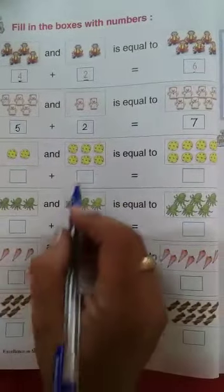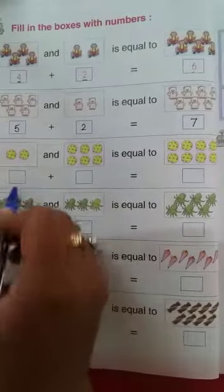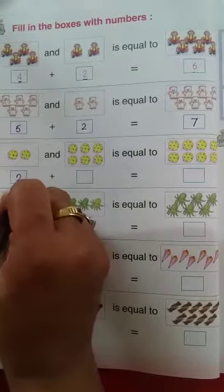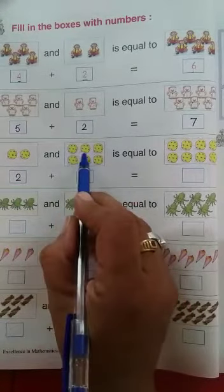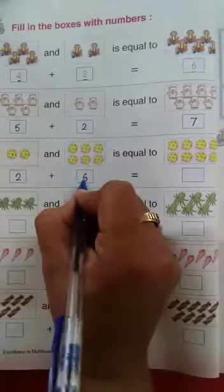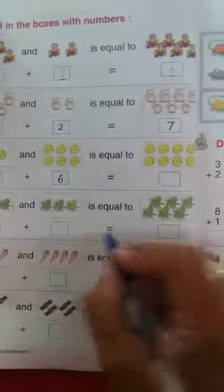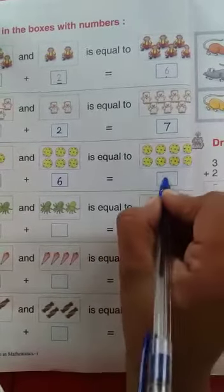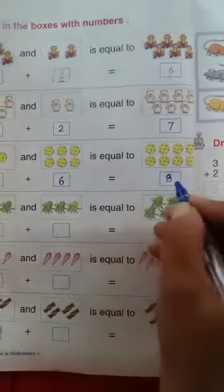Another like this. Some balls are given in 2 boxes. In first box 1 and 2. Kitne balls hai? 2. Another box mein 1, 2, 3, 4, 5, 6. Kitne hai? 6. Ab agar hum inko total karke count karte hain, to kitne aati hai? 1, 2, 3, 4, 5, 6, 7, 8. Kitne balls hai? 8 balls hai.